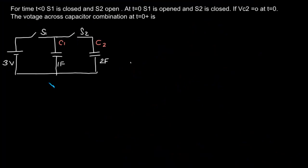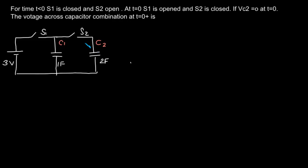For time t less than 0, s1 is closed and s2 is open. At t equal to 0, s1 is opened and s2 is closed. If the initial voltage across the capacitor c2 is 0 at t equal to 0, we are asked to find out what is the voltage across the capacitor combination at t equal to 0+. We will solve this problem by drawing equivalent circuits to make it easier to understand.